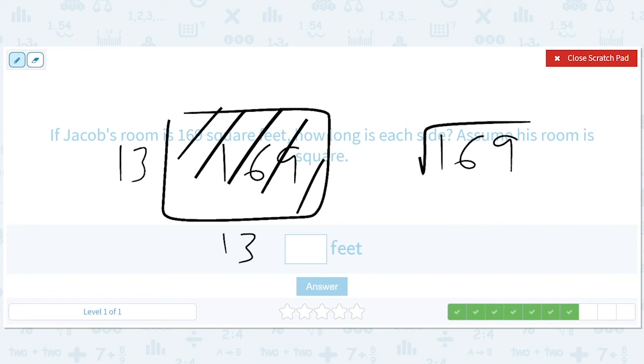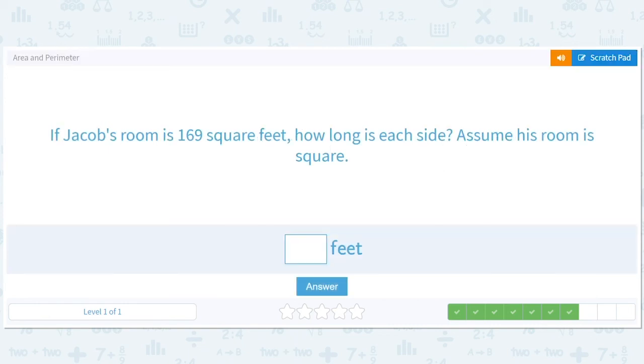Now, what they might do is say something like, Jacob's room is 169 square feet. What's the perimeter? Well, then you'd have to take the 13 and you'd have to multiply by 4, right? So that'd be an extra step. But here, it's just asking for each side.